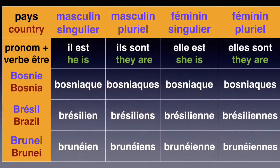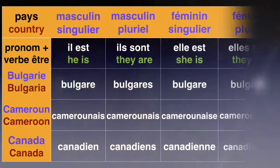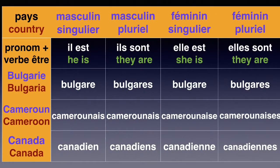Il est bosniac, he's Bosnian. Elle est bosniac — these two are exactly the same. Il est brésilien, he's Brazilian. Elle est brésilienne, double N, E. Il est brunéen, he is Bruneian. Elle est brunéenne, double N, E. And we also note that the Bulgarian forms follow the same pattern — masculine and feminine are the same spelling.